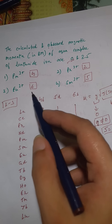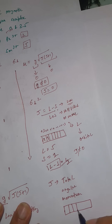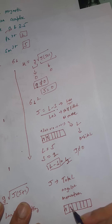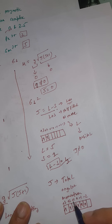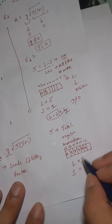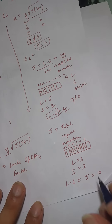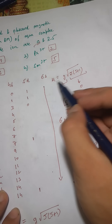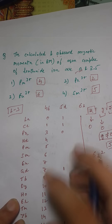Now let's test Eu³⁺, which has six electrons in its 4f orbital. Drawing the f orbital and filling six electrons: +3, +2, +1, 0, −1, −2. Adding all ml values: 3 + 2 + 1 + 0 − 1 − 2 = 3, so L = 3. There are six unpaired electrons so S = 3. Then J = L − S = 3 − 3 = 0. Since J = 0, the entire term √(J(J+1)) = 0, making μ_calculated = 0. Therefore the correct answer is Eu³⁺.